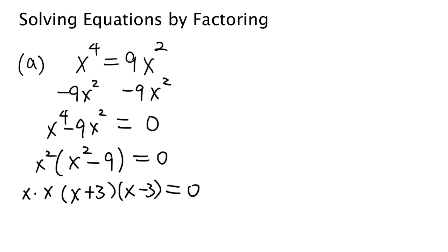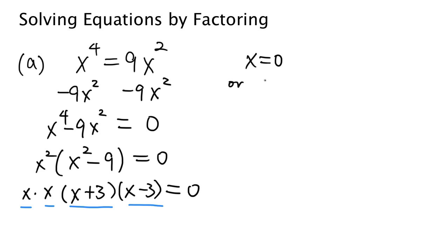So this equals 0. Now we have four factors: x, another x, x plus 3, and x minus 3. Now I'm going to use the zero product property. The zero product property says that if we have several things multiplied together and that equals 0, then we can say that one of those things equals 0. So we can say that either x equals 0, or x equals 0 (the second x), or x plus 3 equals 0, or x minus 3 equals 0.